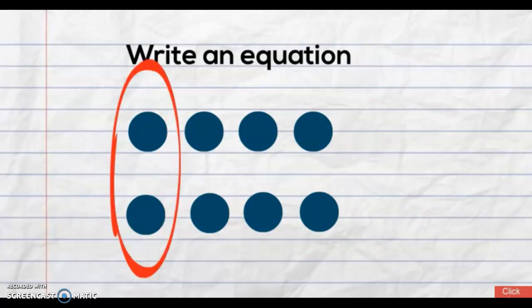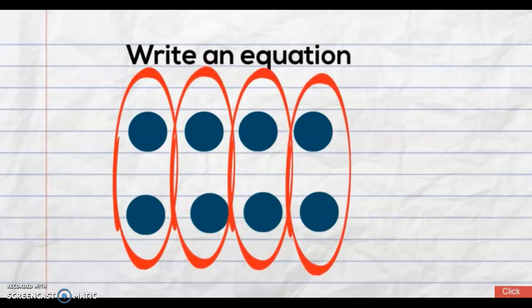We have one, two, three, four columns. So it'll be two times four. Two times four equals eight.